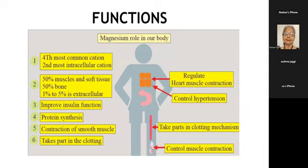Magnesium plays a role in regulating heart muscle contraction, controlling hypertension, and also in the clotting mechanism. It plays a very important role in muscle contraction. Magnesium is an important cofactor of ATP — the energy currency of our cell. It also improves insulin function, so even in diabetics, magnesium plays an important role in improving insulin sensitivity. It also plays a role in protein synthesis.